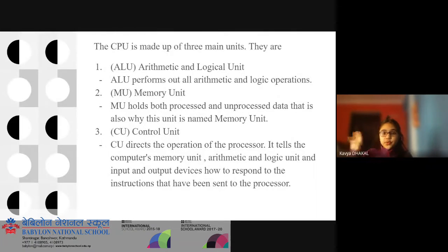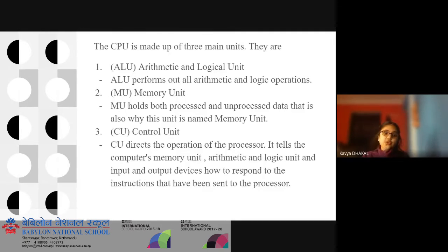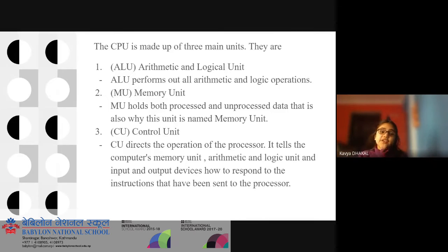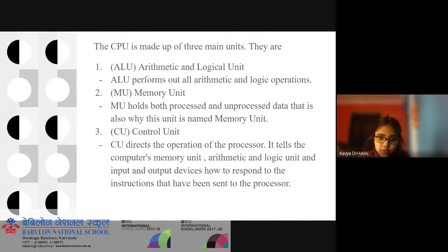The CPU is made up of three main units. 1. ALU — Arithmetic and Logical Unit. ALU performs all arithmetic and logic operations. 2. MU — Memory Unit. MU holds both processed and unprocessed data, which is why this unit is named Memory Unit. 3. CU — Control Unit. CU directs the operation of the processor. It tells the computer's memory unit, arithmetic and logic unit, and input and output devices how to respond to instructions that have been sent to the processor.